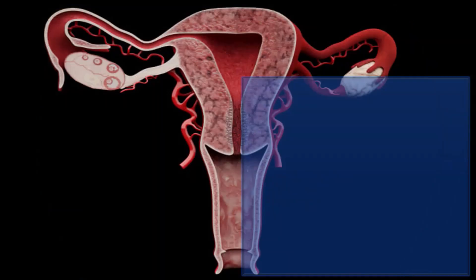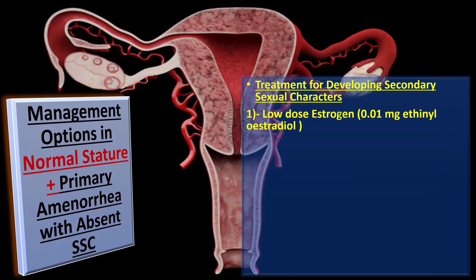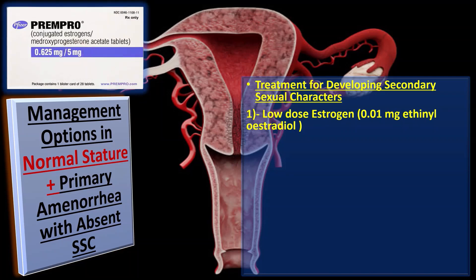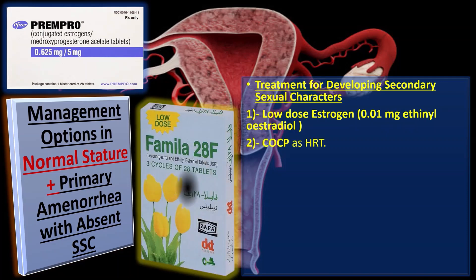For normal stature with primary amenorrhea and absent secondary sexual characteristics: low-dose estrogen 0.01 mg ethinyl estradiol is given twice daily for three weeks every month for several months to develop secondary sexual characteristics. Once they develop, patients are started on combined oral contraceptive pills as HRT.